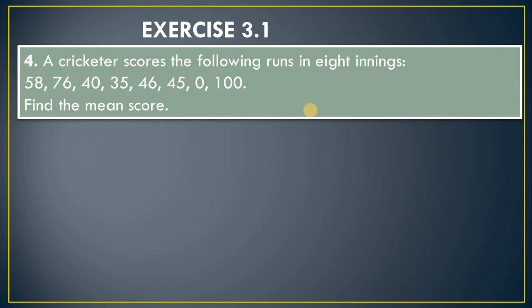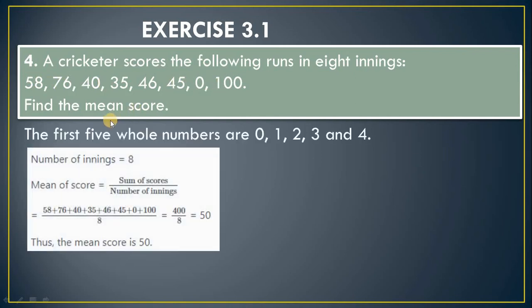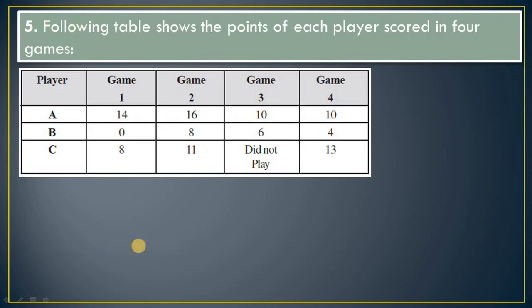Question 4: A cricketer scored the following runs — find the mean score. Addition of all values divided by the total number of observations, which is 8. The sum is 400 divided by 8, so the mean score is 50.